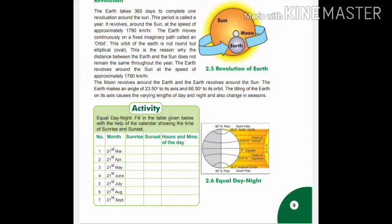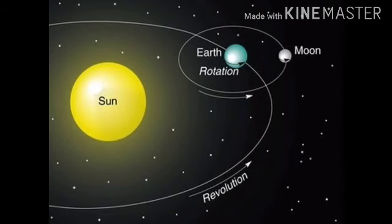The earth moves continuously on a fixed imaginary path called an orbit. The orbit of the earth is not round but oval in shape. The moon revolves around the earth and the earth revolves around the sun.